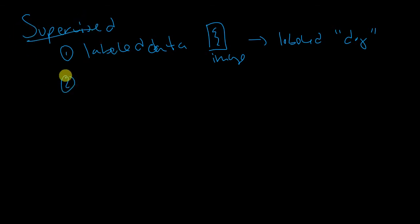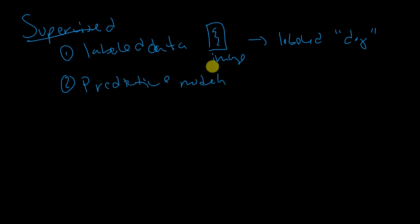We're going to see supervised learning used primarily in something called predictive modeling. Predictive modeling is exactly what you think it's going to be. It's the classic examples you hear — spam emails, house prices, sepal length — and when we get into the financial market, they try to use supervised learning to find different patterns that exist within the data.